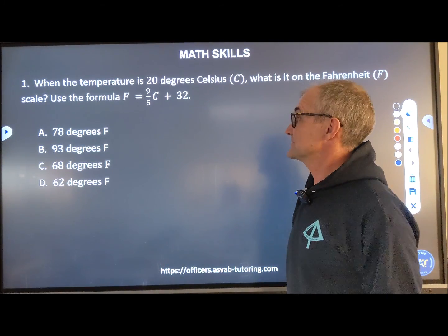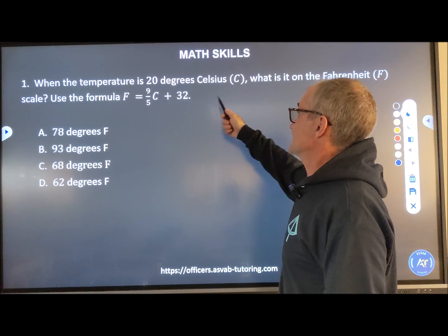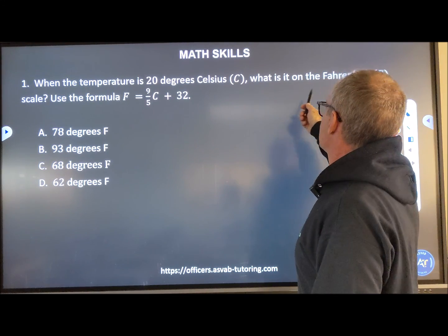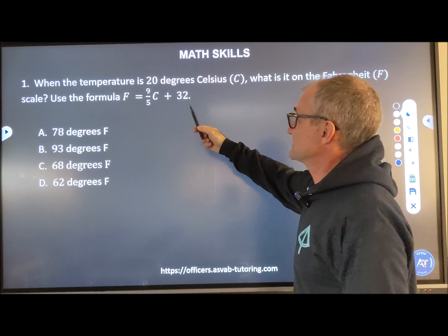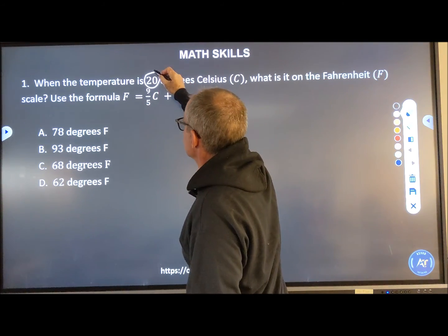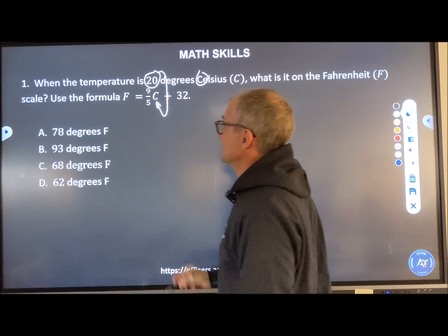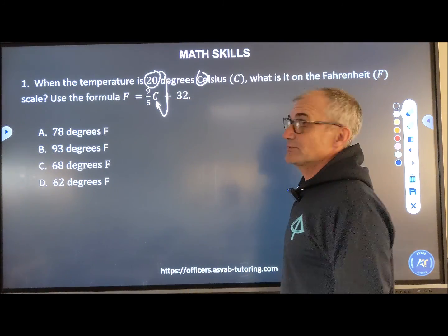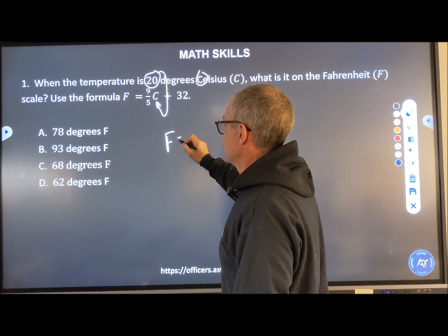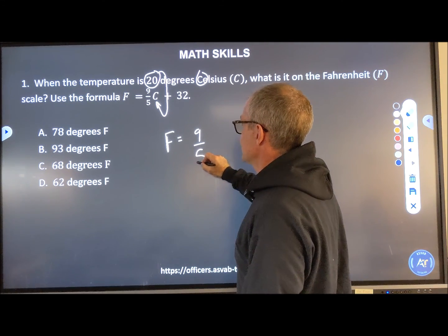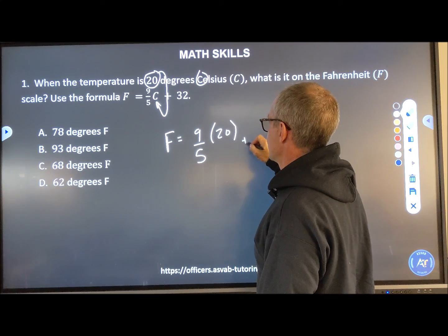Let's jump right in. When the temperature is 20 degrees Celsius, what is the Fahrenheit? Here's the formula. It's telling you it is 20 degrees Celsius, so that 20 just gets plugged in right there. Every one of these problems you should be able to do without a calculator. So F is equal to nine-fifths times C, which we know is 20, plus 32.